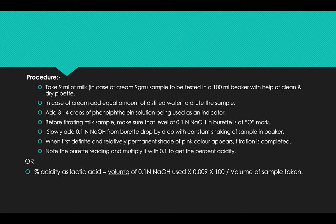For the acidity test, take 9 ml of milk sample to be tested in 100 ml beaker with the help of a clean dry pipette. In case of cream, add equal amount of distilled water to dilute the sample. Add two to three drops of phenolphthalein solution as an indicator. Before titrating the milk sample, make sure that level of 0.1 normal sodium hydroxide burette is at zero mark. Slowly add 0.1 normal sodium hydroxide from burette drop by drop with constant shaking of sample in beaker.